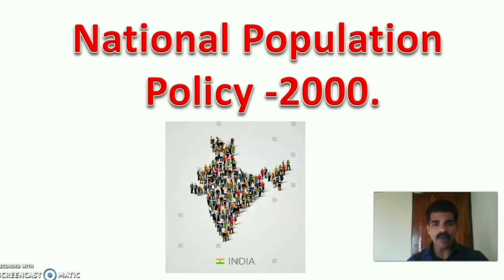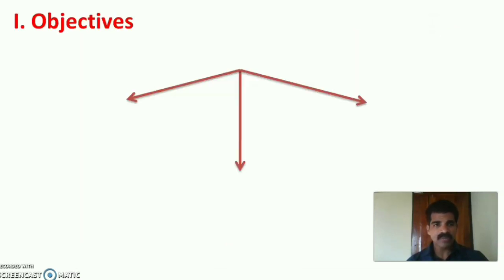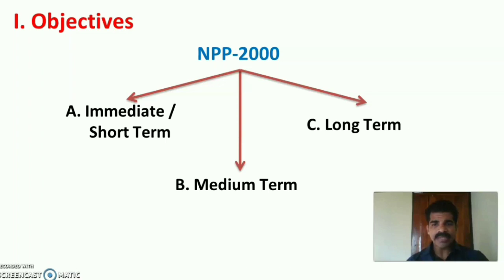The new National Population Policy 2000 was announced by the Government of India on 15th February 2000, under the chairmanship of then Honorable Prime Minister Atal Bihari Vajpayee. There are three main objectives: first, immediate or short-term objectives; second, medium-term objectives; and third, long-term objectives.